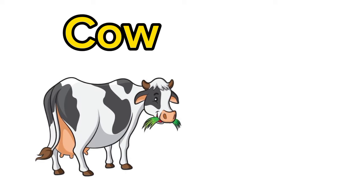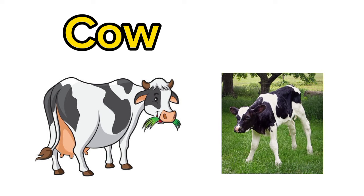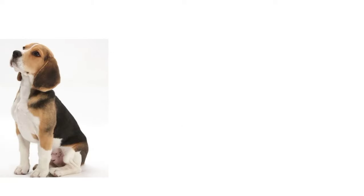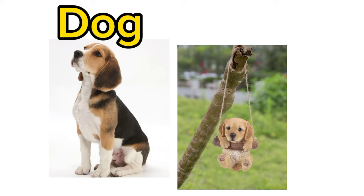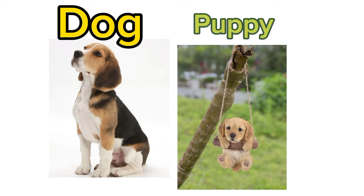Cow. Calf. Baby cow is called Calf. Dog. Puppy. Baby dog is called Puppy.